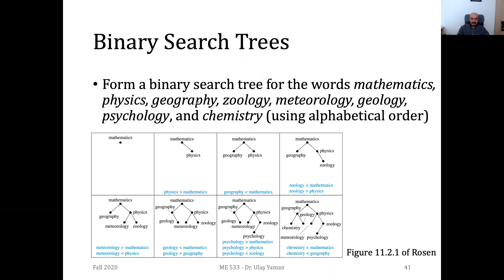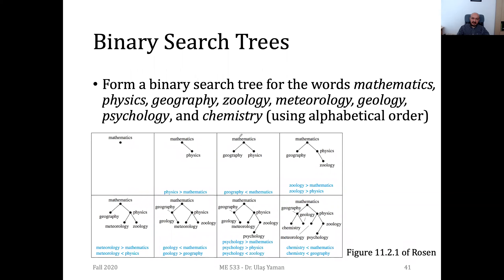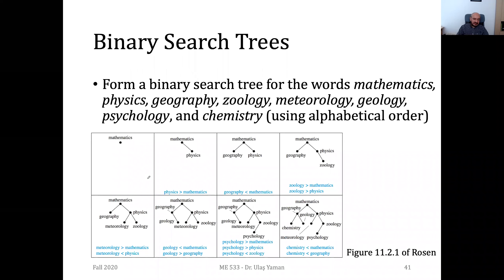The third word is geography. Starting from the root, geography is smaller than mathematics, so it goes to the left subtree. Then comes zoology, which is higher than mathematics and also higher than physics, so it goes to the right subtree. Then meteorology is higher than math but smaller than physics, so it goes on the left subtree of physics.